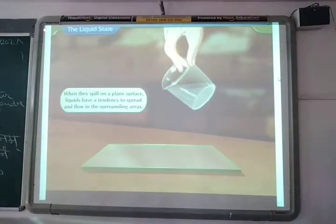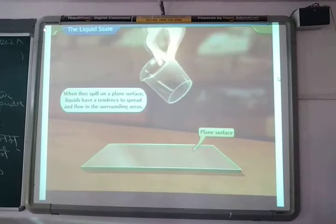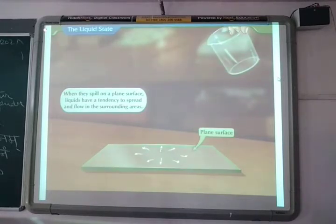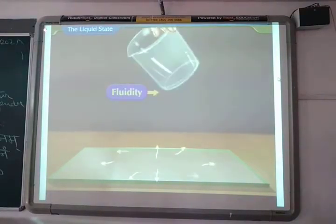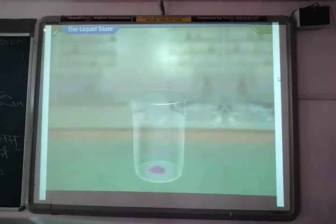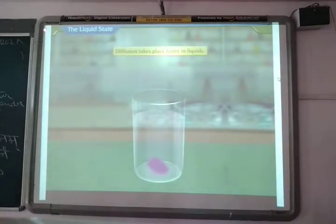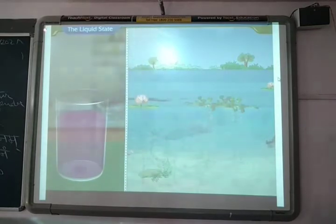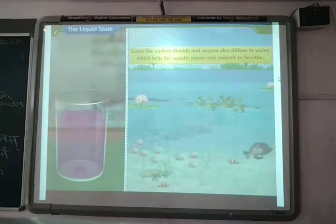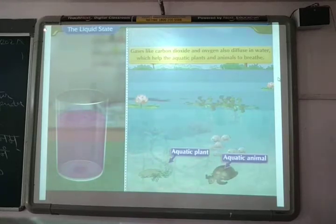Liquids have a tendency to spread and flow in the surrounding areas. This property is called fluidity. Diffusion takes place faster in liquids. It can be clearly seen in the spread of potassium permanganate into water. Also, gases like carbon dioxide and oxygen also diffuse in water, which help the aquatic plants and animals to breathe.